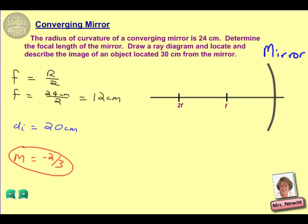The next thing we want to do, then, is add our object, and our object is located 30 centimeters from the mirror. Earlier, we found that F was 12 centimeters, so 2F would be 24. So, for an object that's 30 centimeters away, we need to place it a little bit outside the point 2F, then.